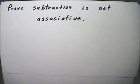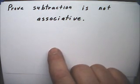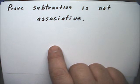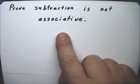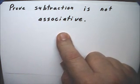Hello, this is operations with numbers, the commutative and associative properties, example 7. And in this example, we have to prove that subtraction is not associative.